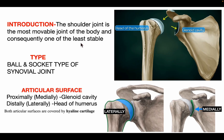Introduction: the shoulder joint is the most movable joint of our body and one of the least stable — that's why dislocation occurs here. It is a ball and socket type of synovial joint. The articulating surface is proximally or medially the glenoid cavity, and distally or laterally the head of the humerus.